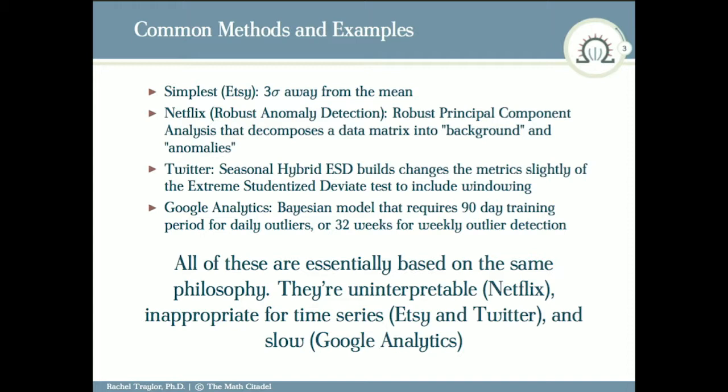Twitter uses essentially the extreme studentized deviate test, which is a fancy way of Etsy's, but they use more robust statistics. Instead of a mean, they'll use a median. When they say seasonal hybrid, it means they window the data and do it in chunks. So it's a fancier Etsy. All of these are essentially based on the same philosophy, which I, as a mathematician, have a bit of a problem with.